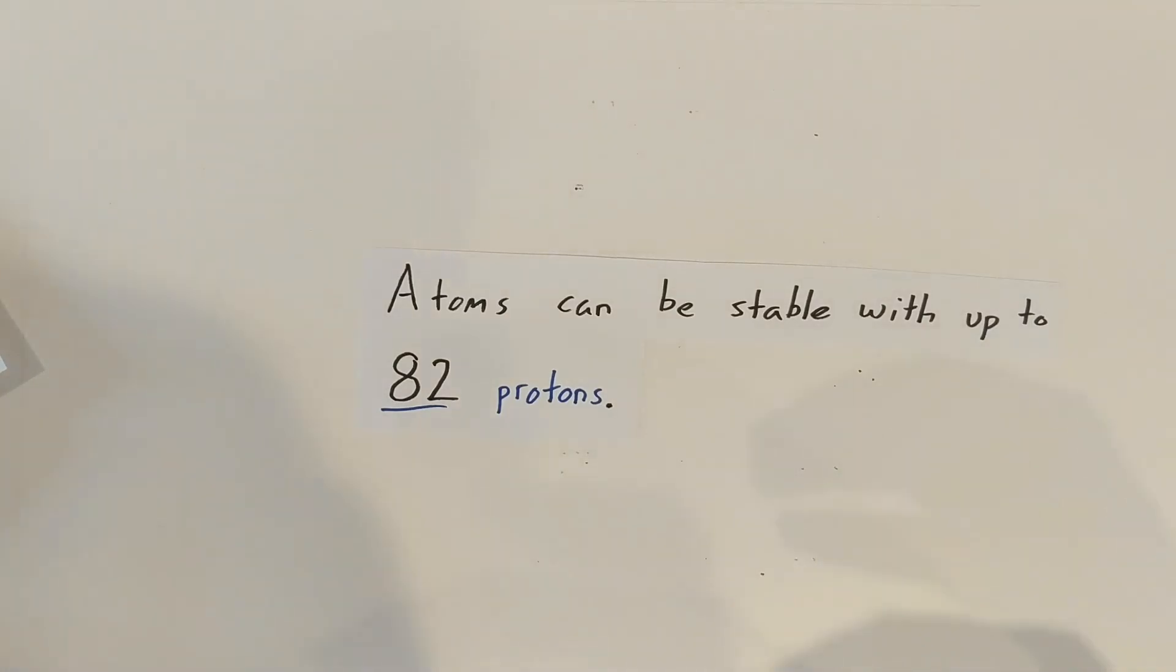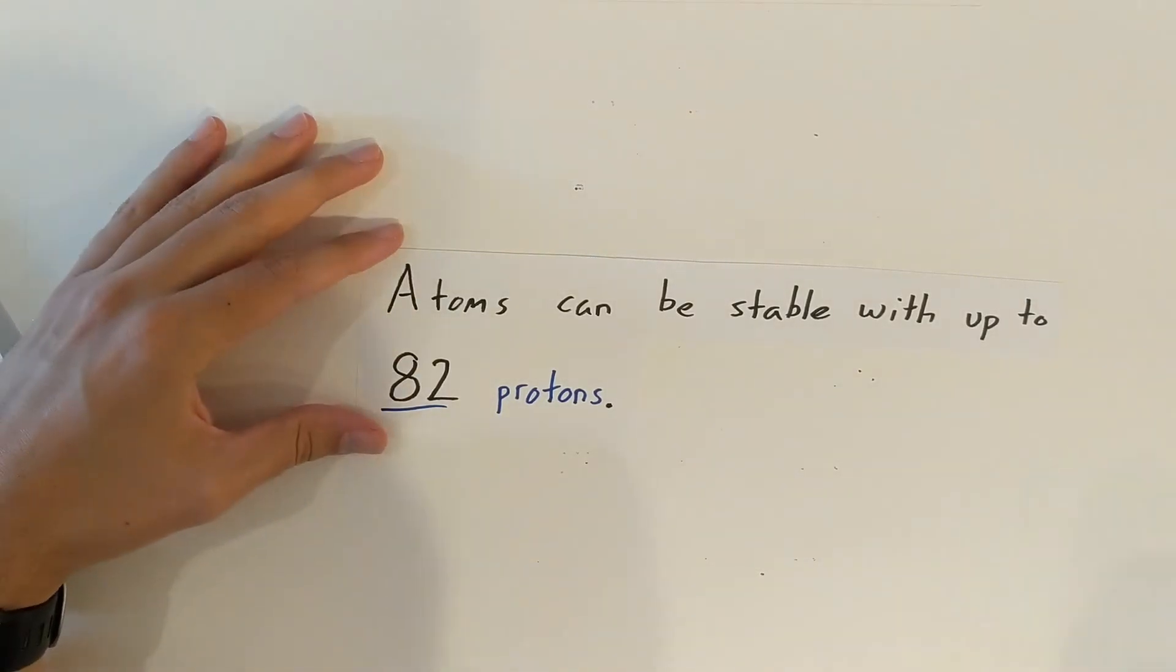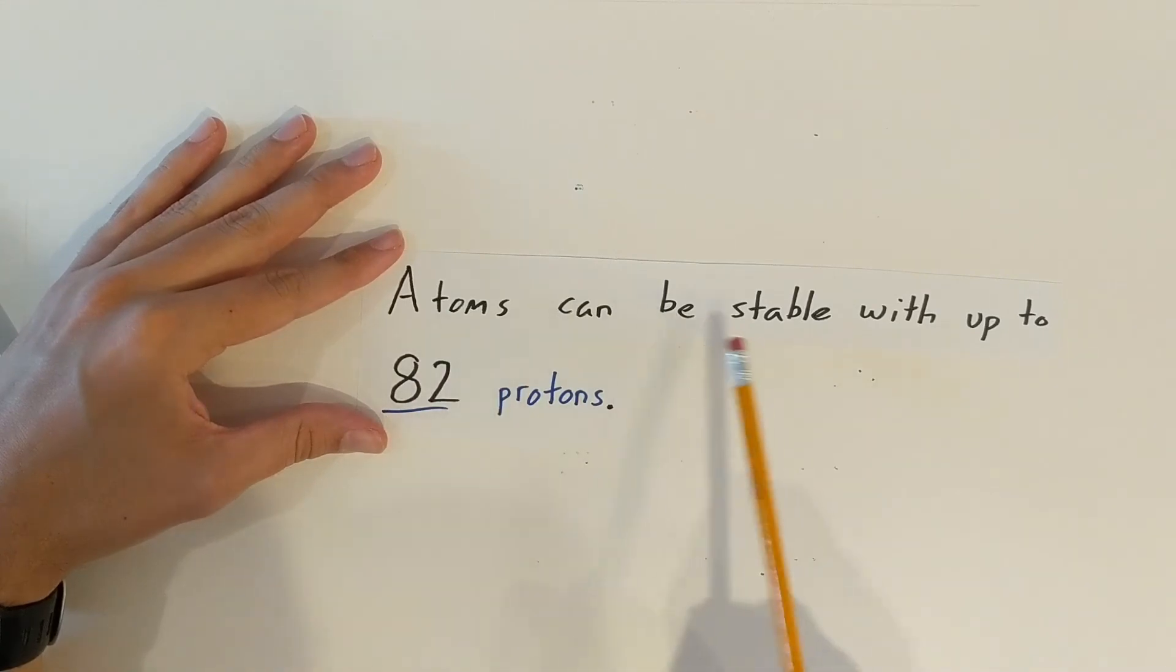And it doesn't matter how many neutrons we have holding those protons together, it can't be stable. It will decay over a period of time. So just remember the atom that has the most amount of protons that can be stable is going to be 82.